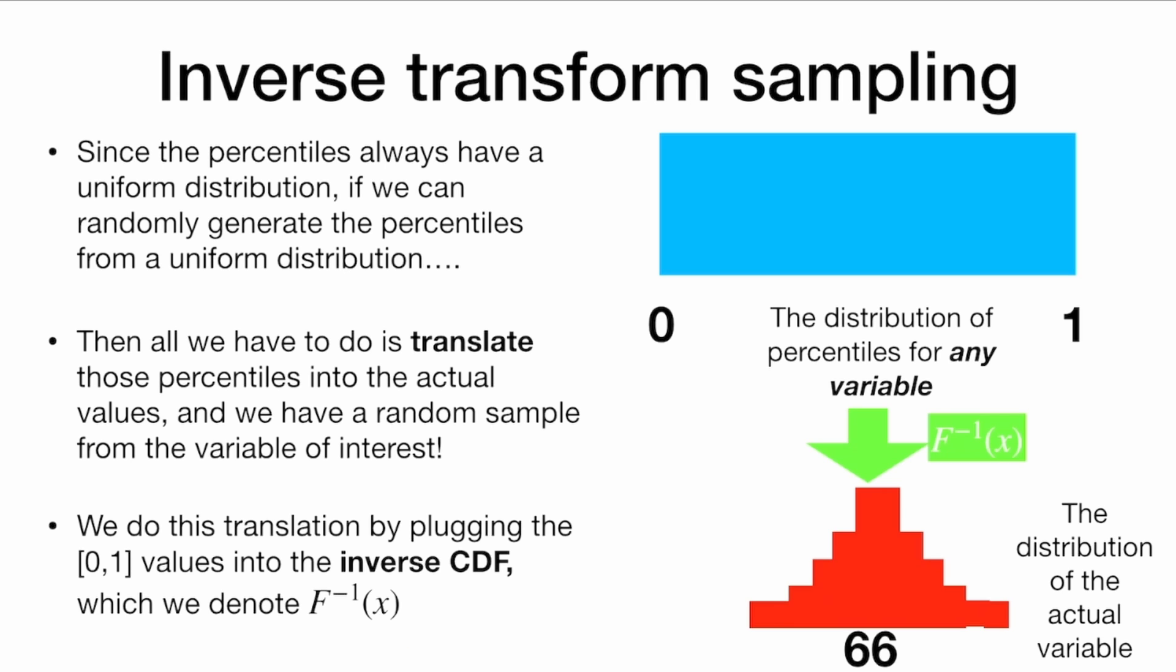Okay, so we can generate numbers from this uniform distribution. We plug them into the inverse CDF function, and the values that will be spit out will be transformed into the distribution of the actual variable of height, which might look like this, something like a normal distribution.